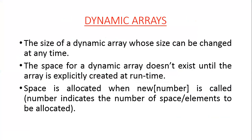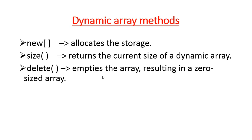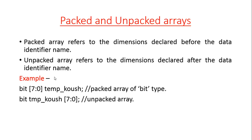Next we will discuss dynamic arrays. Dynamic arrays are arrays whose size can be changed at any time. The space for a dynamic array does not exist until the array is explicitly created at runtime — space is allocated only when the 'new' method is called, where the number indicates the number of rows. The 'size' method returns the current size of the dynamic array, and the 'delete' method empties the array, resulting in a zero-sized array.